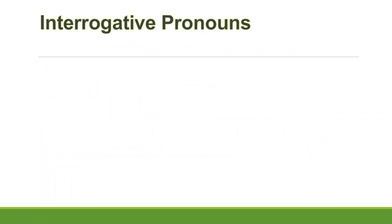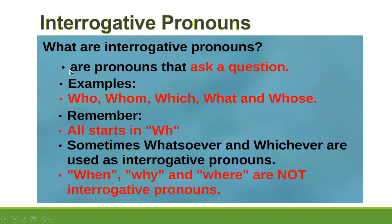Let's go to the third lesson — interrogative pronouns. Interrogative pronouns are pronouns that ask a question. We have only five: who, whom, which, what, and whose. These are easy to memorize because they all start with 'wh.' Sometimes 'whatsoever' and 'whichever' are used as interrogative pronouns. Remember: when, why, and where are NOT interrogative pronouns.